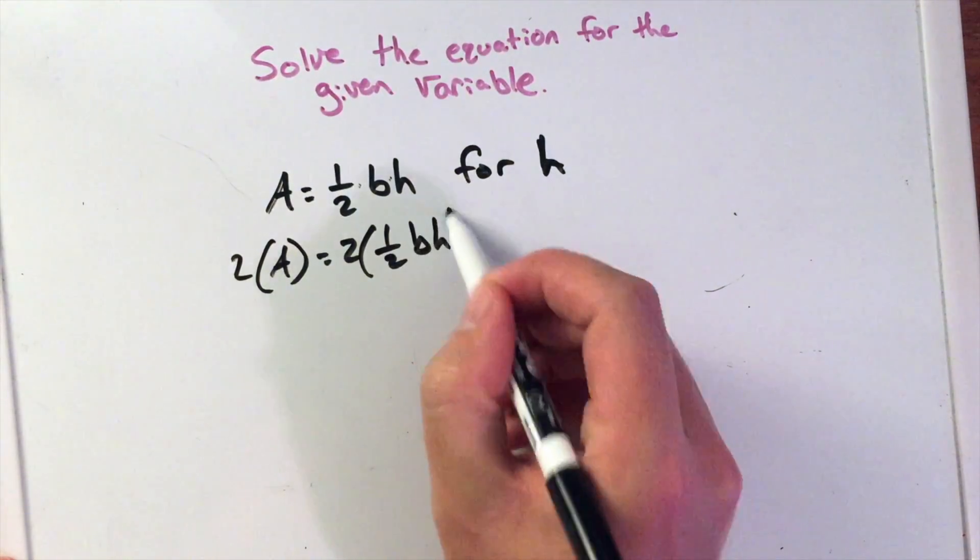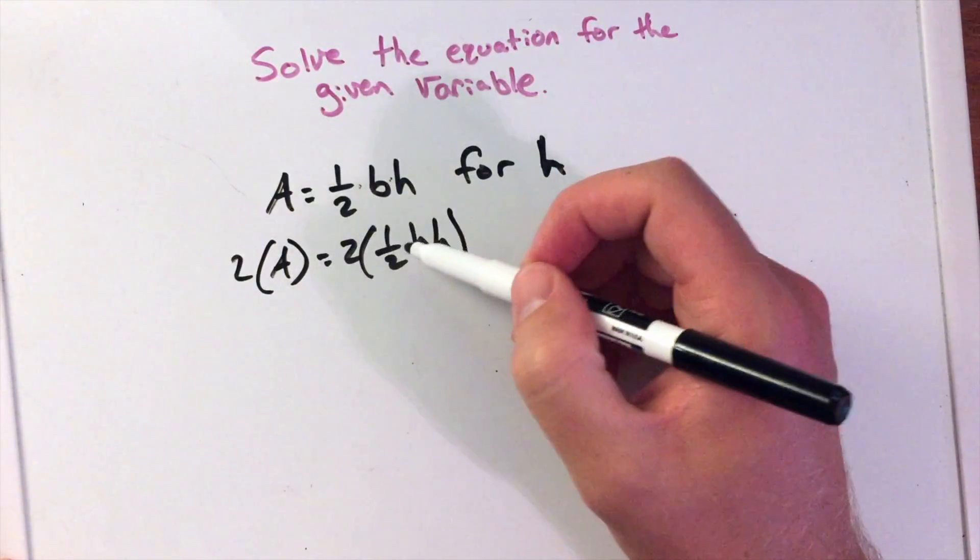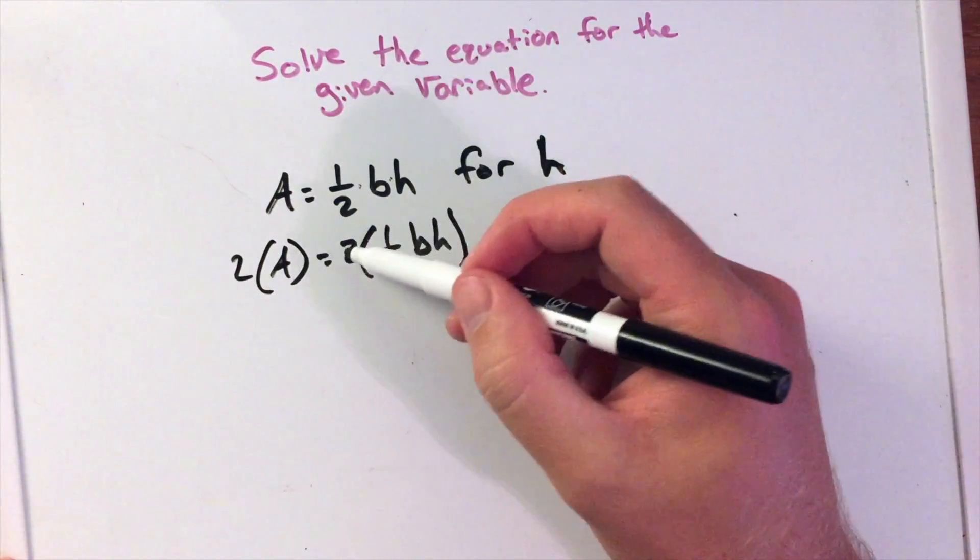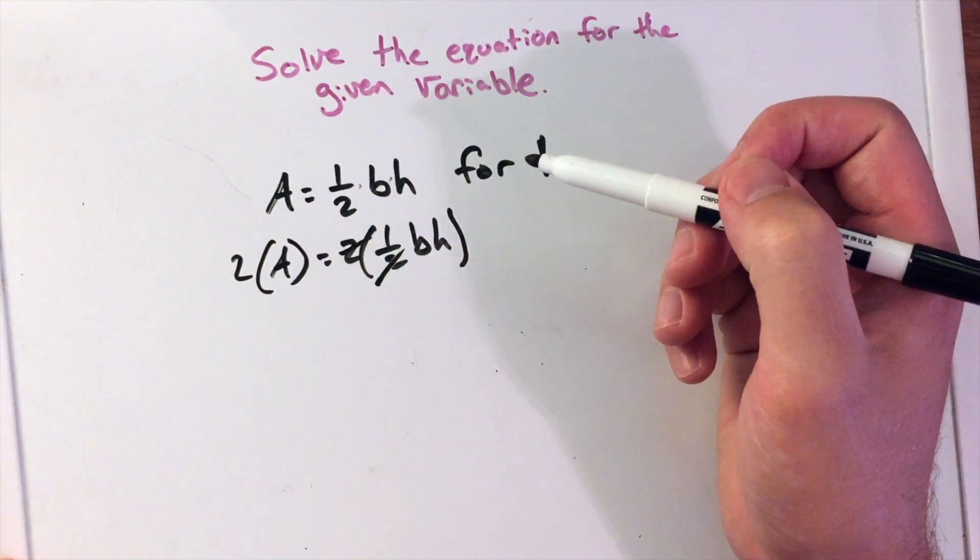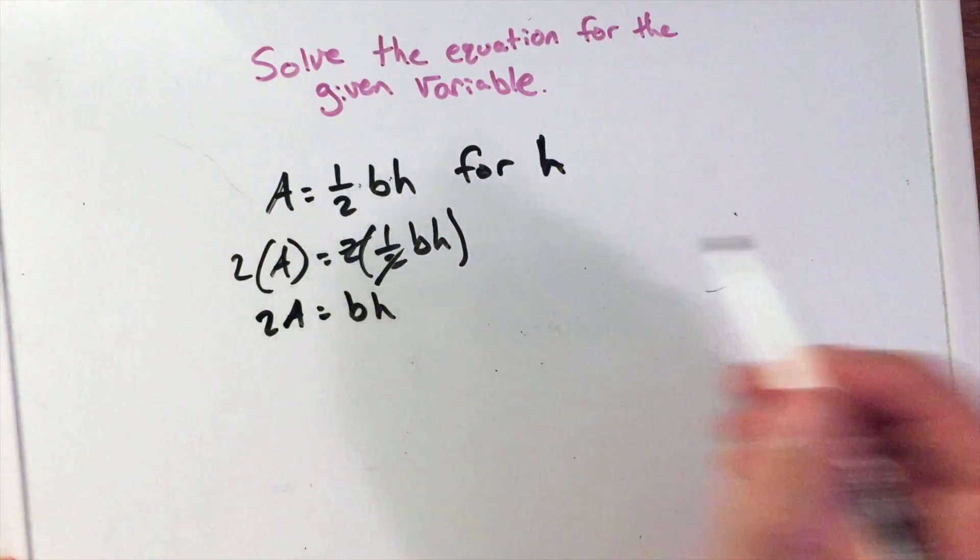Now remember, we're multiplying the whole right side by 2. But since this is a multiplication, we don't have to distribute. It cancels out that 1/2. That's the goal. And we're left with 2A equals b times h.